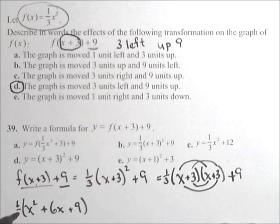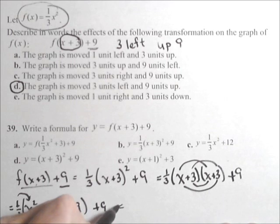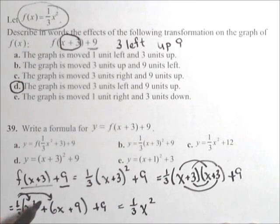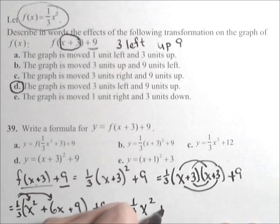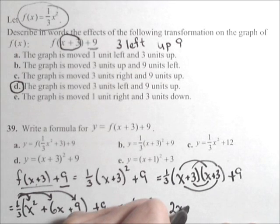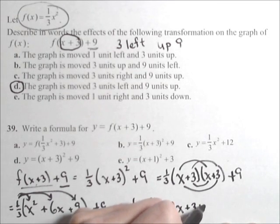Now this whole thing needs to get multiplied by one-third, and then we'll add nine at the end. So distributing the one-third, we have one-third x squared. One-third times six is two, so plus two x. And then one-third times nine is plus three, plus nine.